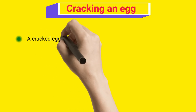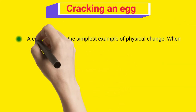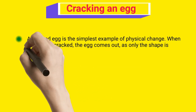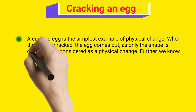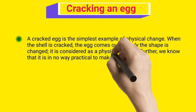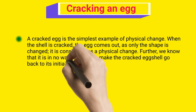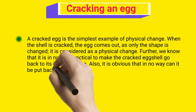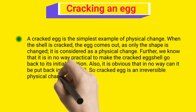Cracking an egg. A cracked egg is the simplest example of physical change. When the shell is cracked, the egg comes out. As only the shape is changed, it is considered a physical change. Further, we know that it is in no way practical to make the cracked eggshell go back to its initial position. Also, it is obvious that the egg cannot be put back into the shell. So a cracked egg is an irreversible physical change.